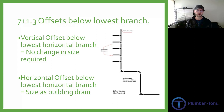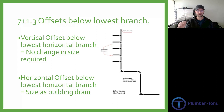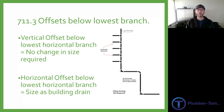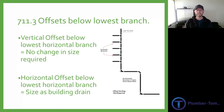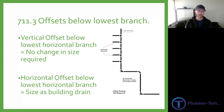7-11.3 talks about offsets below the lowest branch. Say we have a vertical stack with horizontal branches coming into it, but at the very bottom it offsets and there are no other connections below that. For a vertical offset, we will not have to change the size. However, in the case of a horizontal offset below that lowest horizontal branch, it would still need to be sized as a building drain once that pipe turns horizontal.